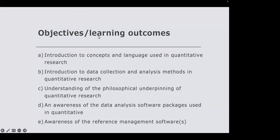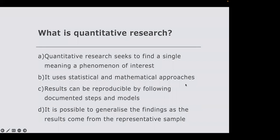In quantitative research, we seek to find a single meaning of a phenomenon of interest. Quantitative research appeals to a different ontological and epistemological perspective compared to qualitative research. Quantitative research is likely to be aligned with objectivist ontology and positivist epistemology. That is important to remember.